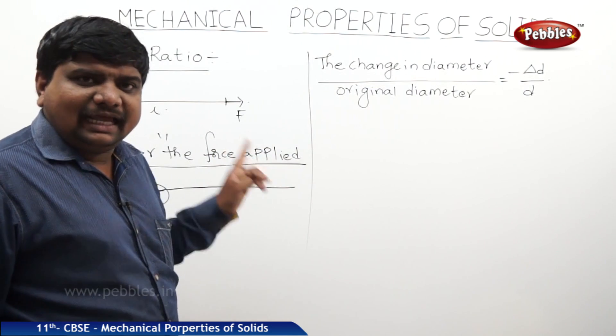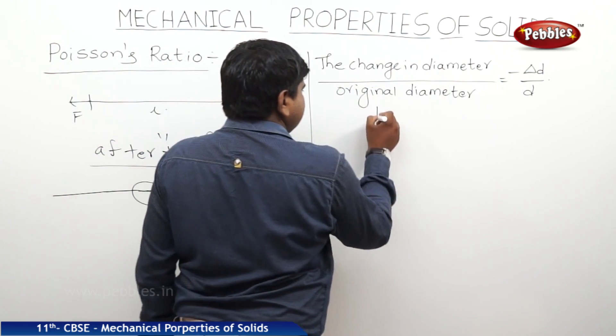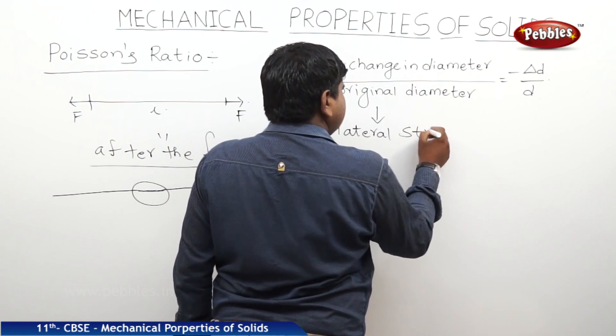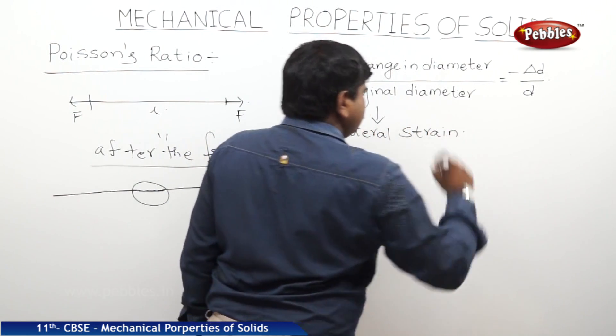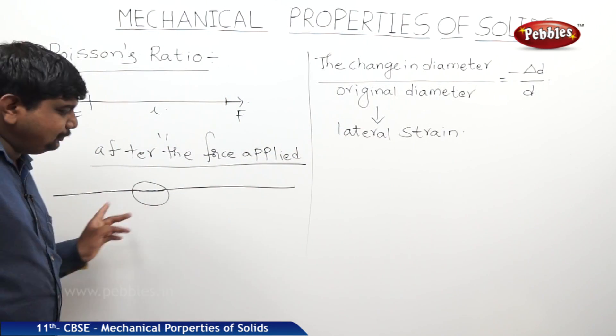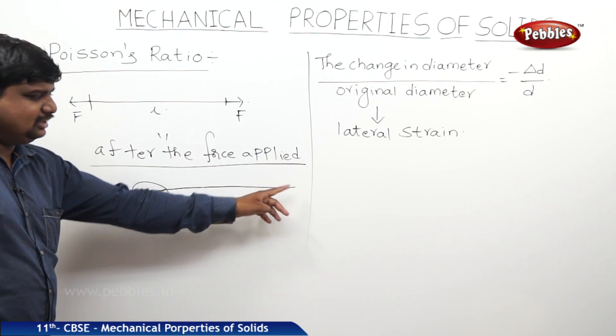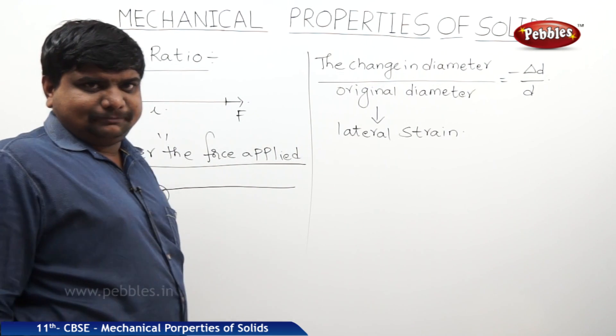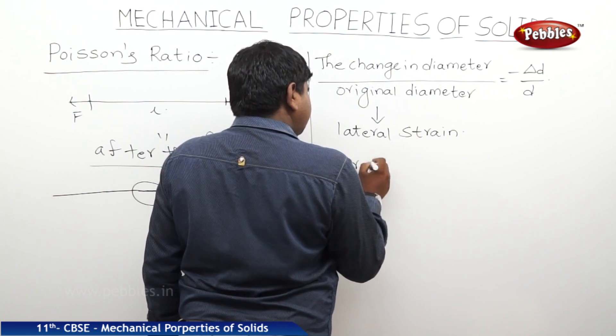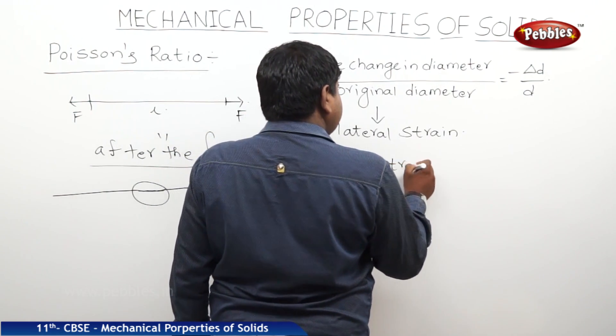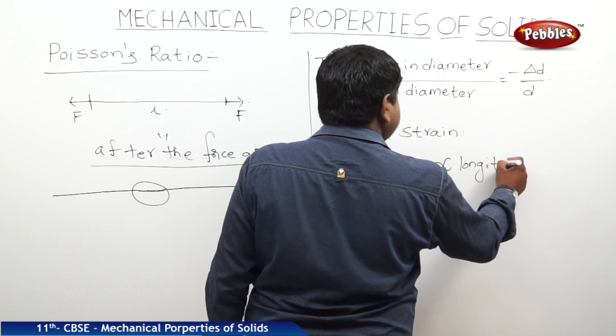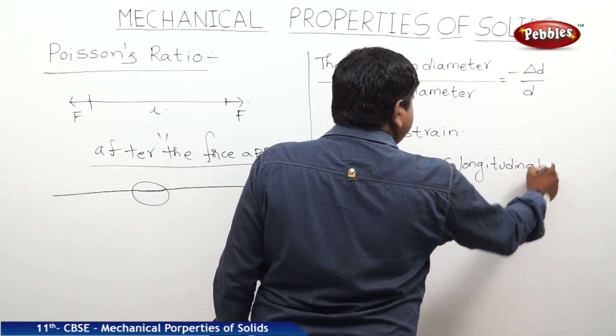This is called lateral strain. This lateral strain is directly proportional to the longitudinal strain, which is applied on either ends. Lateral strain is directly proportional to the longitudinal strain.